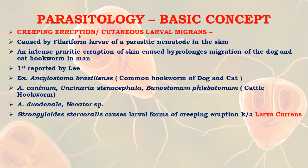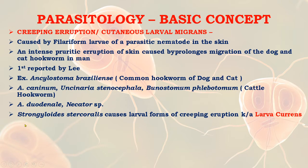Creeping eruption, or cutaneous larval migrans, is caused by filariform larvae of a parasitic nematode in the skin. It is an intense pruritic eruption of the skin caused by prolonged migration of dog and cat hookworm larvae in humans. Examples include Ancylostoma braziliense (common hookworm of dog and cat), Ancylostoma caninum, Uncinaria stenocephala, Bunostomum phlebotomum (cattle hookworm), Ancylostoma duodenale, Necator americanus, and Strongyloides. The larval form causing creeping eruption is known as larva currens.